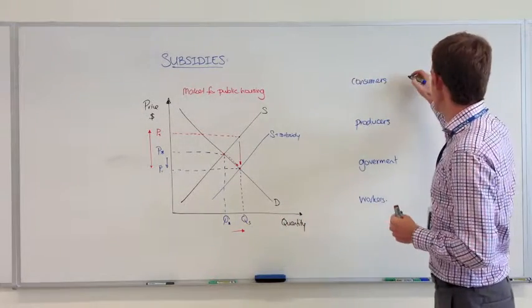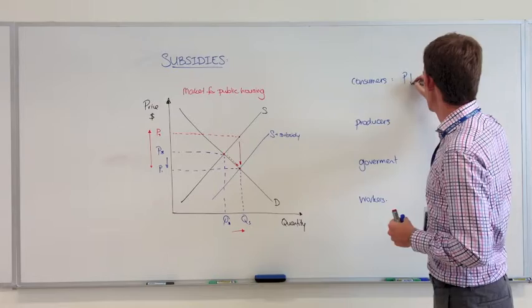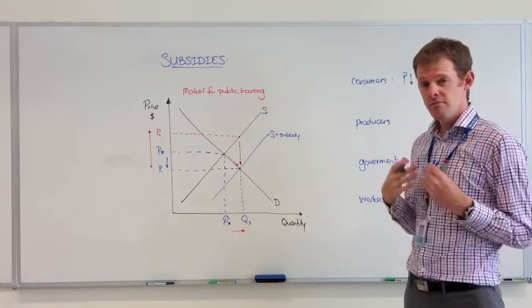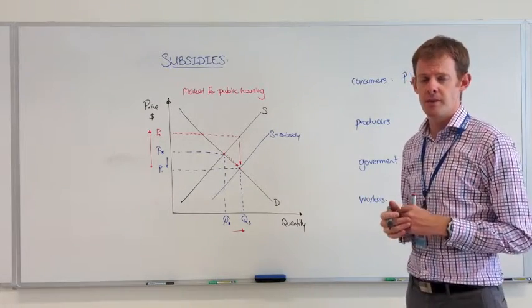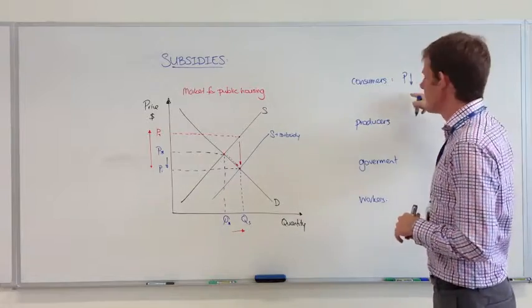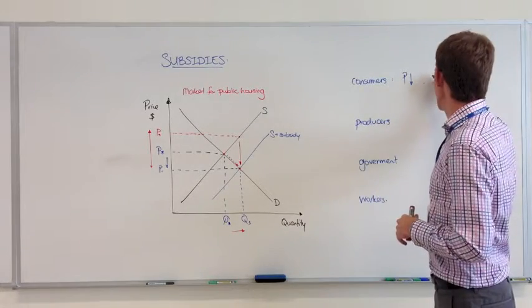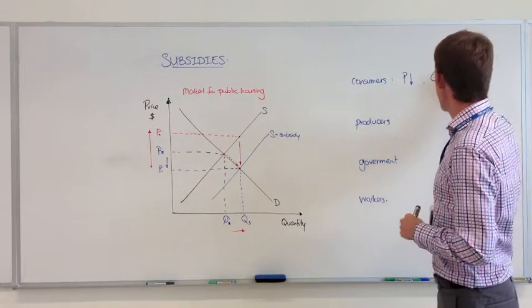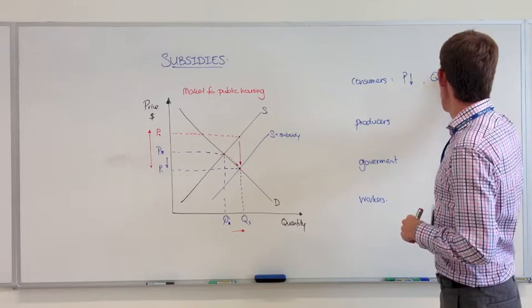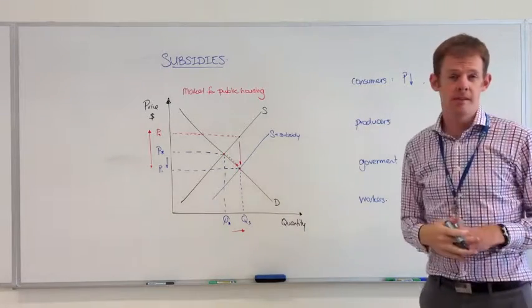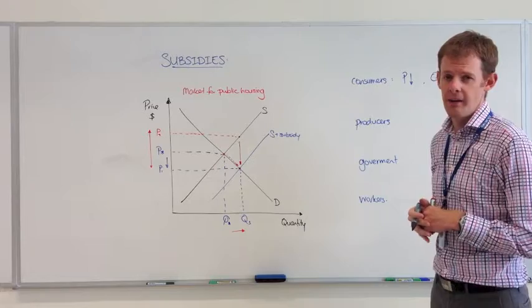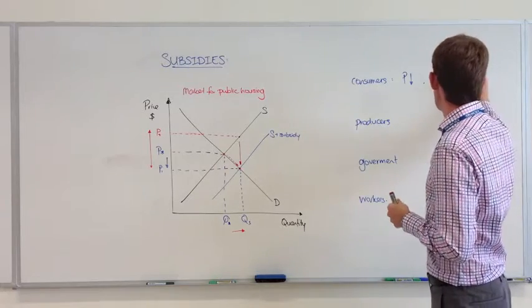For consumers, these types of products, which are sometimes called merit goods and public goods, we've had a fall in price. At the same time, we've had an increase in the quantity demanded, which is positive for households. This is increasing their welfare.